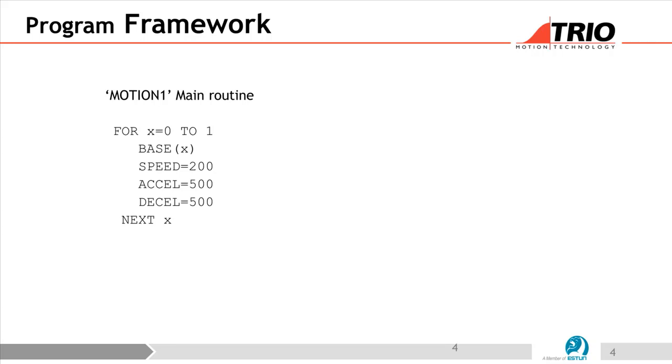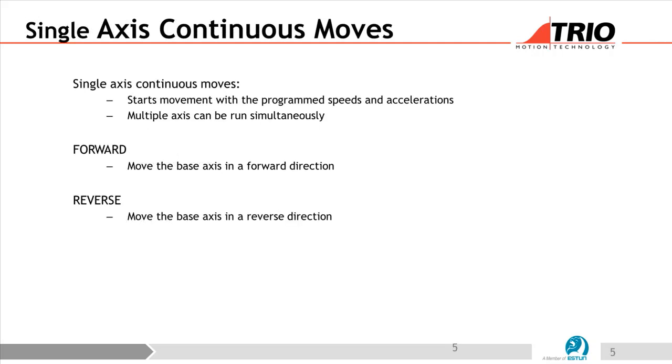Looking at the framework - this is for axis zero to one. The single axis continuous move starts movement with the program speeds and acceleration. Multiple axes can be run simultaneously. If you type in your command line BASE(0) FO, it should move forward. But before you do that, make sure you have your server on and your watchdog.